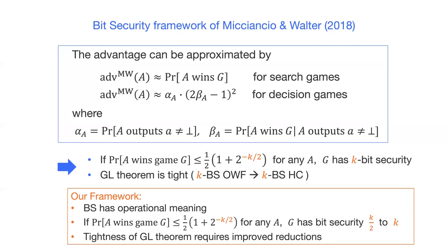Compared to their results, the differences from our framework are as follows. First, our notion has an operational meaning. Second, if the conventional advantage is at most 2^{-k/2}, it does not imply k-bit security in our framework — the bit security lies between k/2 and k. Also, proving the tightness of the Goldreich-Levin theorem in our framework remains open; to prove it, we need to improve the reduction.